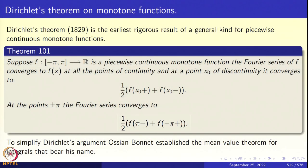Recall that we started discussing Dirichlet's theorem on the convergence of the Fourier series for a monotone function, and this concerns pointwise convergence. The hypothesis is that the function is piecewise continuous and monotone — meaning we can break the interval minus pi to pi into finitely many non-overlapping pieces such that on each interval the function is monotone, with jump discontinuities at the overlap points. At points of continuity the Fourier series converges to f, and at points of discontinuity it converges to the arithmetic mean of the right-hand limit and the left-hand limit.